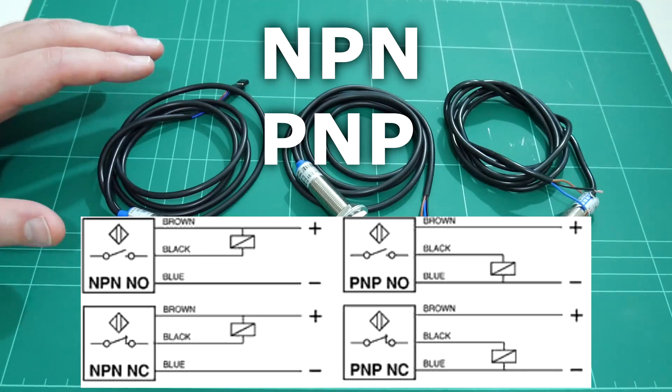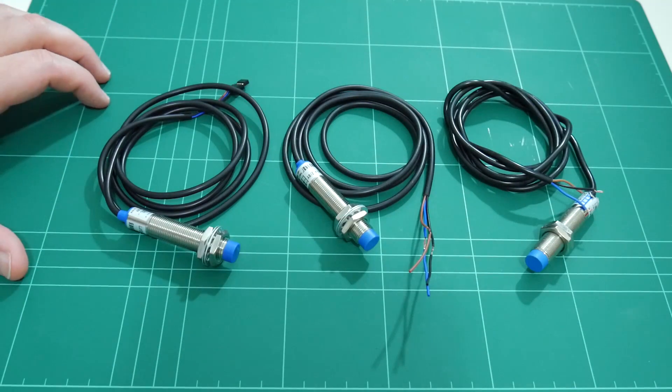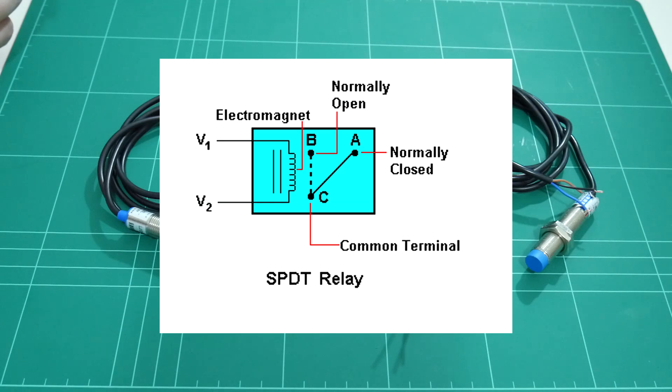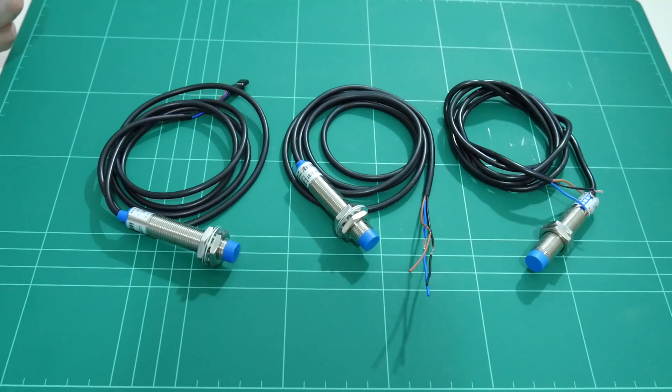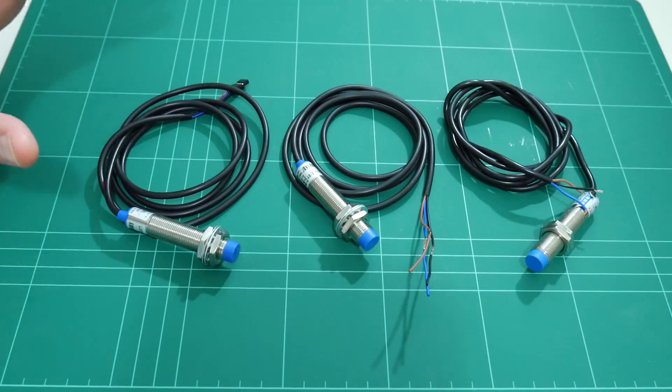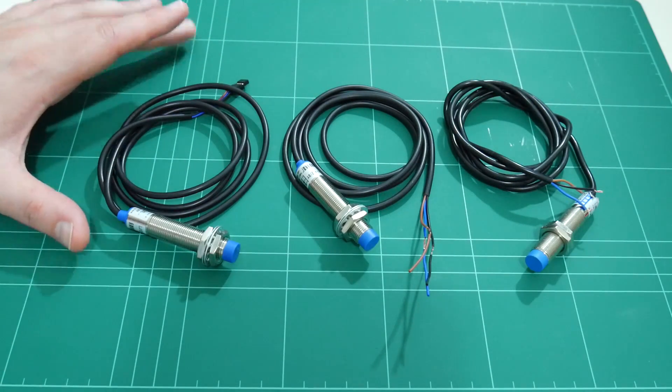These options can make choosing an inductive probe confusing, especially when NPN PNP is terminology used to describe a transistor, and normally open, normally closed is terminology used to describe a relay switch position. In my opinion, it doesn't matter which probe you choose, as we can change the end stop trigger behavior in firmware.